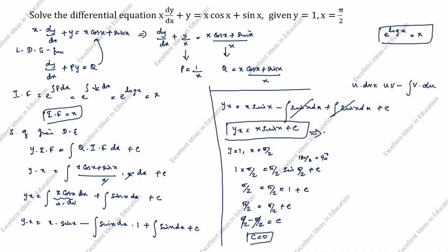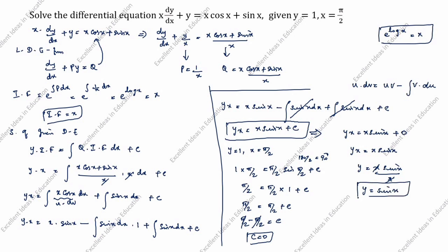So yx = x sin x + 0, which gives yx = x sin x. Therefore y = x sin x / x, and x cancels to give y = sin x. This is the answer. Thanks for watching this video.